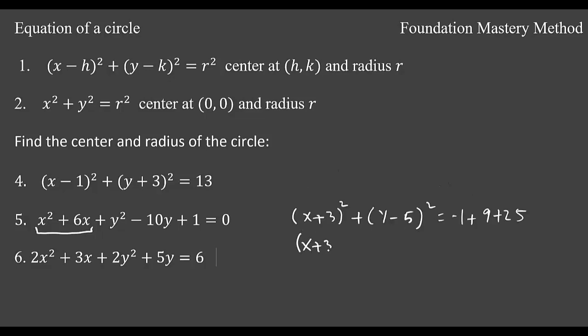(x + 3)² + (y - 5)² will be giving you here 33. So then center will be at (-3, 5) and radius r will be radical 33.